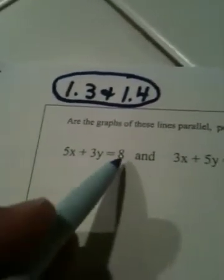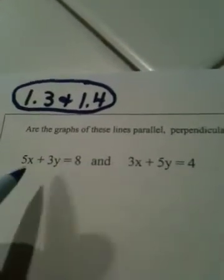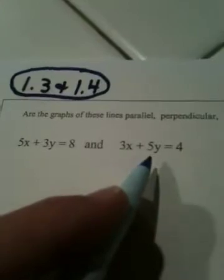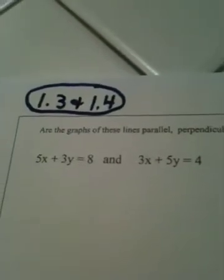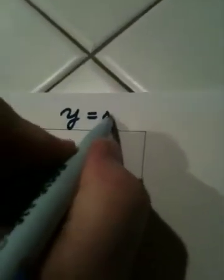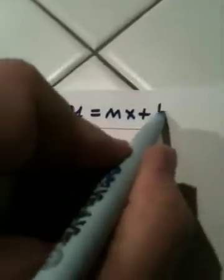What we have to do is compare their slopes. Now, the problem with these equations is that they're not in the correct form. To actually find the slope of each line, we need the lines to be in the form y equals mx plus b. That's called slope-intercept form.